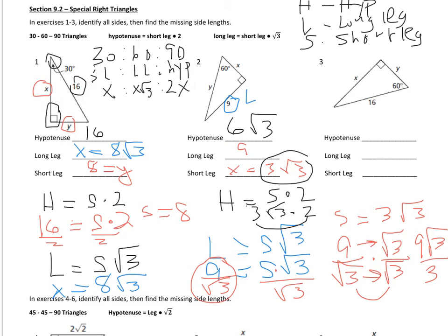Now I want you to do number 3 on your own. Write down what the hypotenuse is, what the long leg is, and what the short leg is. The substitute will turn them in to me and I will grade them myself.